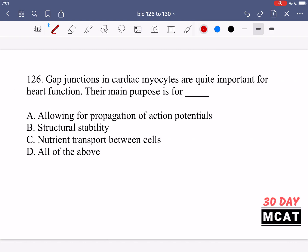In question 126 it says gap junctions in cardiac myocytes are quite important for heart function. Their main purpose is for blank. So we're talking about gap junctions and we want to know their main purpose. What is the main reason that they exist?